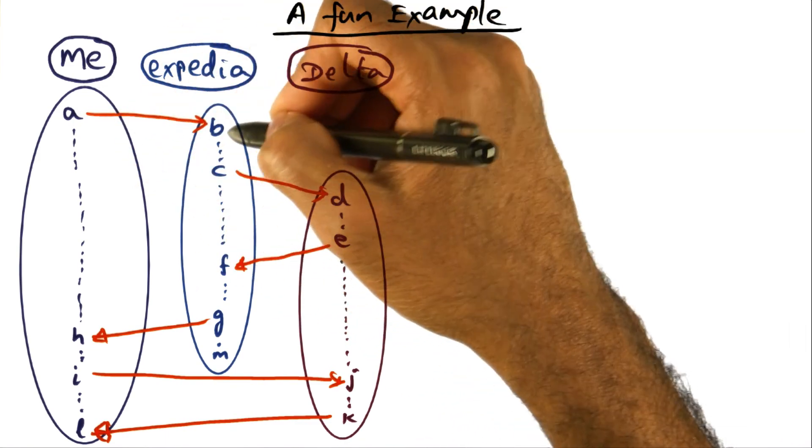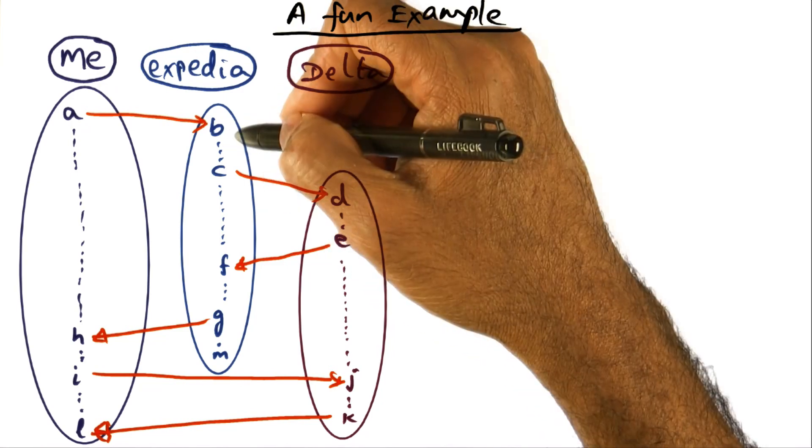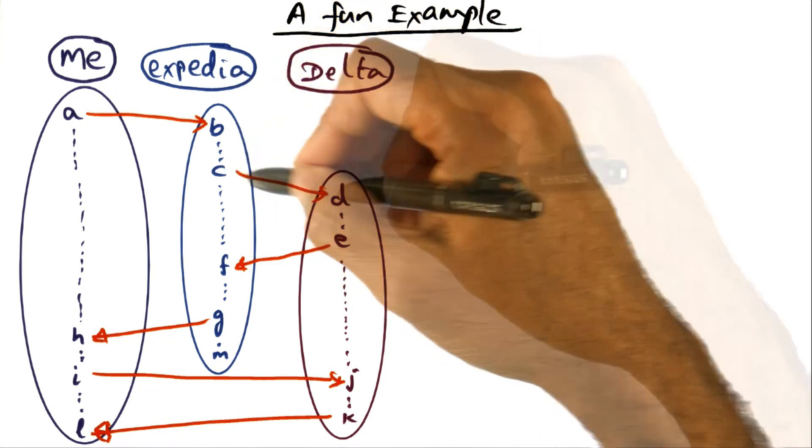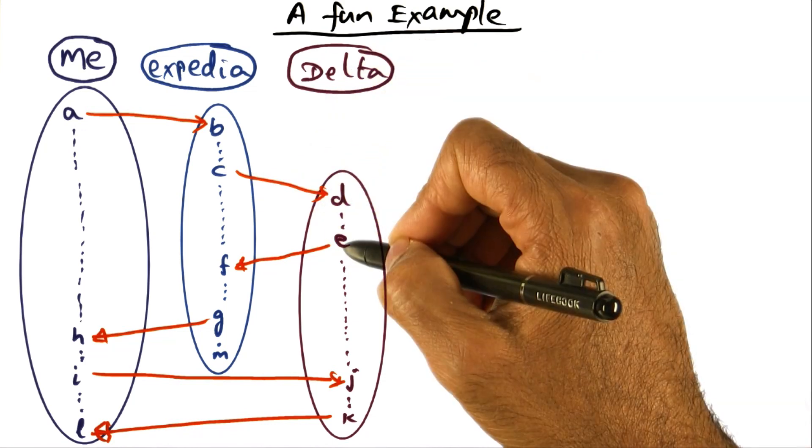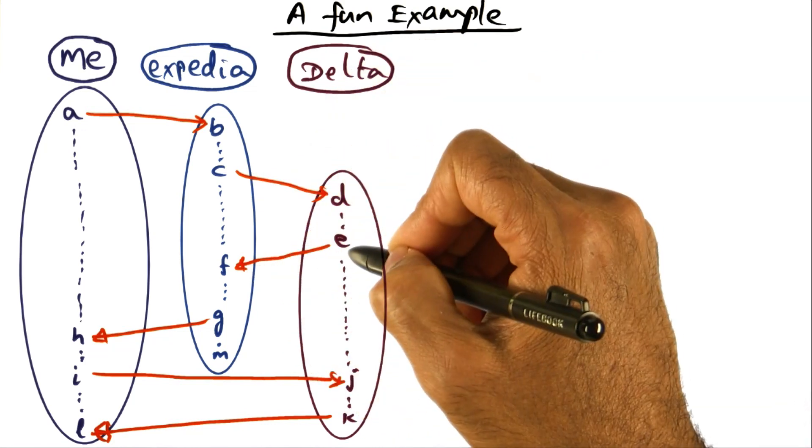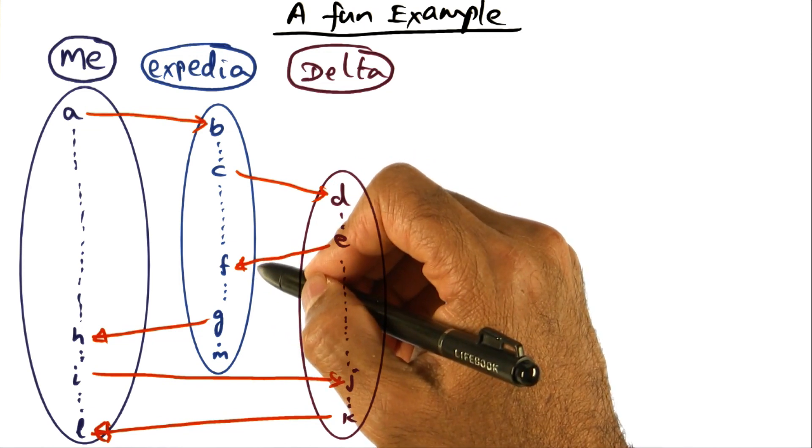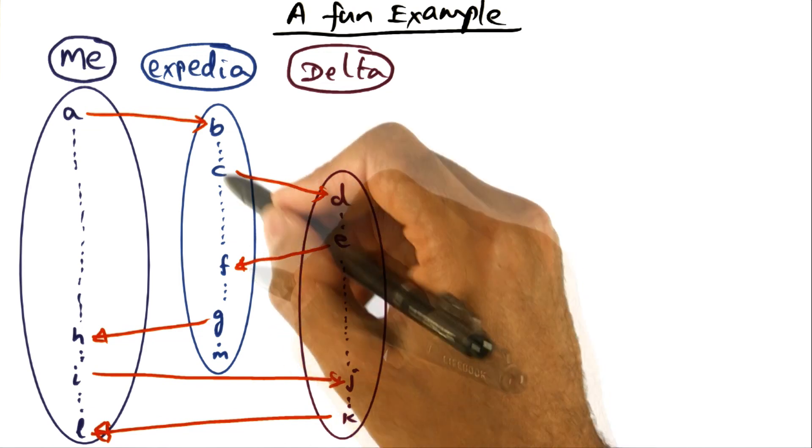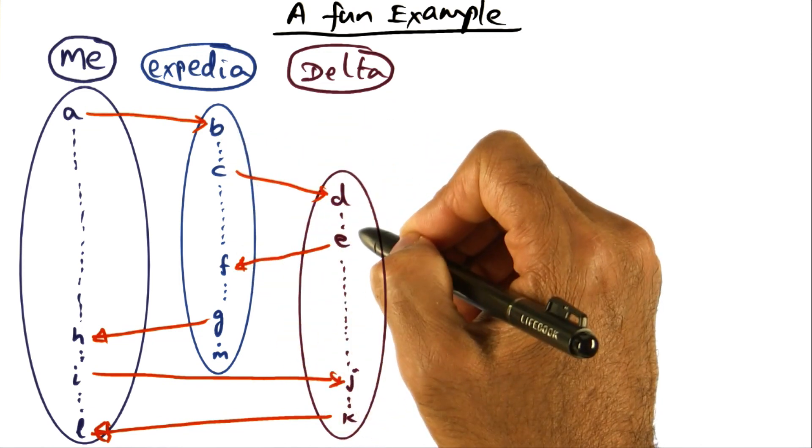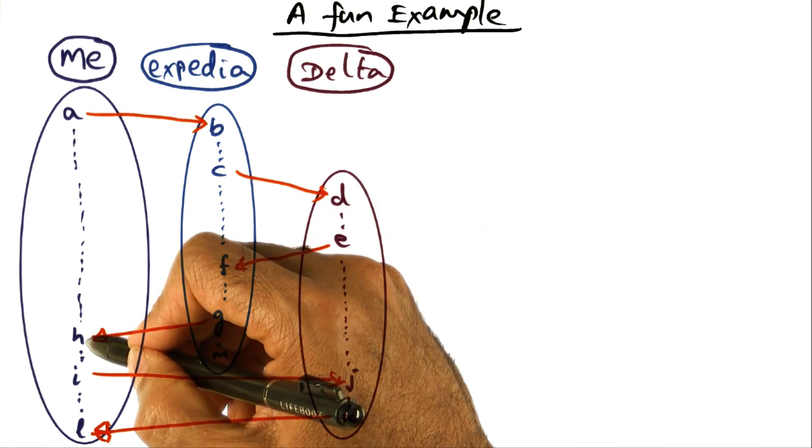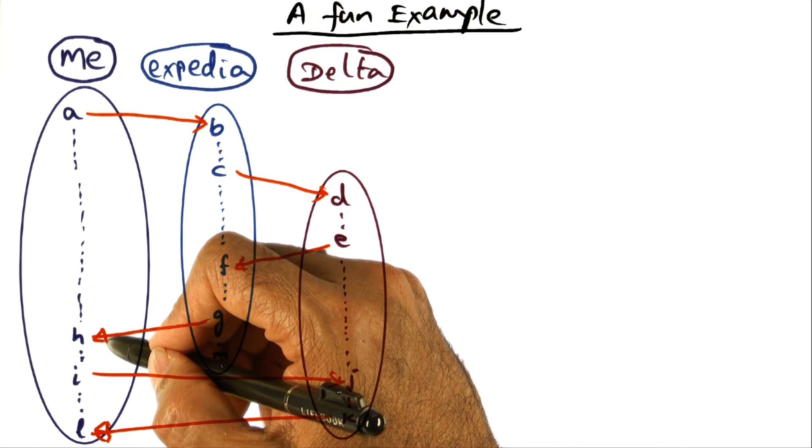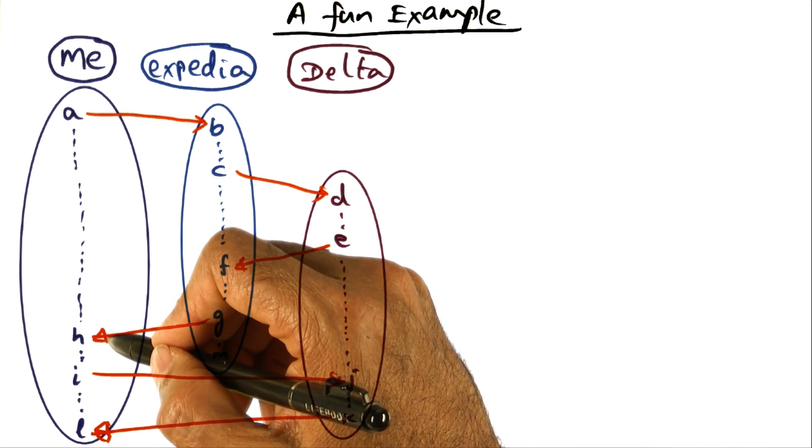A to B is a message that I sent to Expedia saying I need a ticket to go to India, preferences and so on. Expedia then sends a message to Delta, booking the reservation that I want. Delta confirms by this message, E to F, that yes, Kishore's reservation is in. And once Expedia has received this confirmation from Delta, it sends me a message, G to H, and this message is telling me that I've got the airline reservation booked.